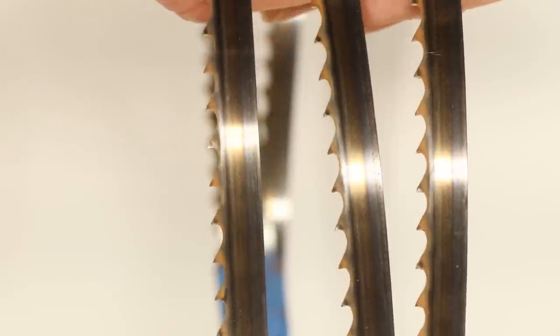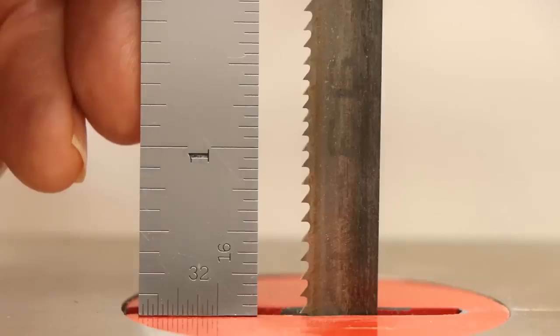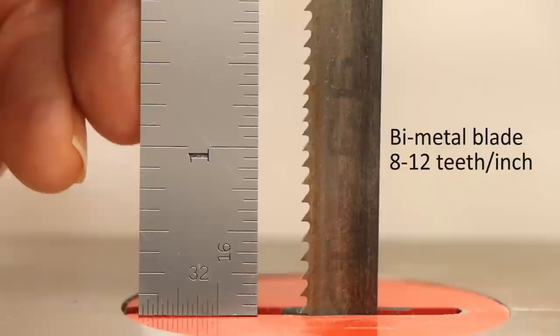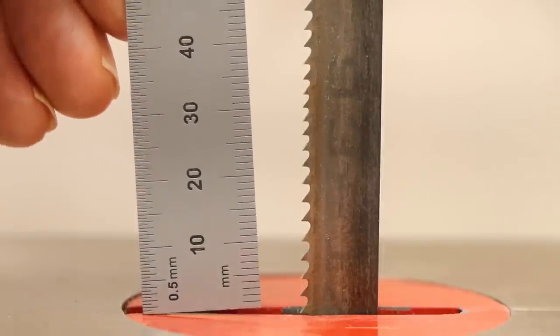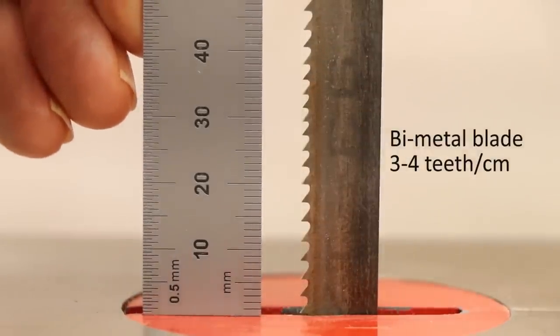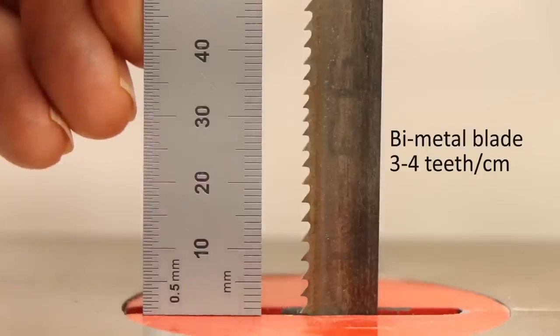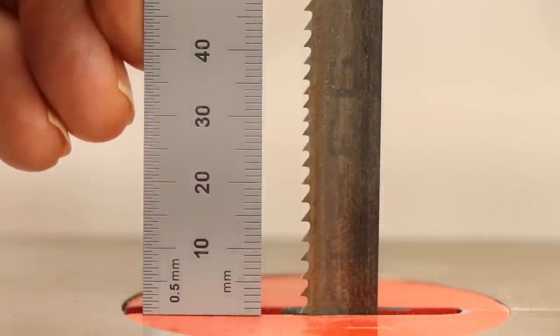I purchased a bimetal blade designed for cutting soft metals. The teeth are hardened, high-speed M2 steel, while the rest of the blade is a softer, springier steel. It has a variable 8 to 12 teeth per inch, or 3 to 4 teeth per centimeter. It works like a charm, and it didn't cost much more than an economy blade.